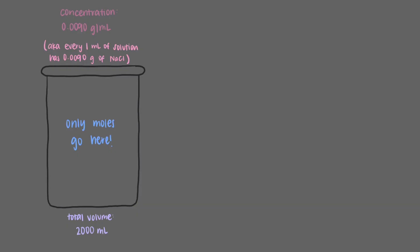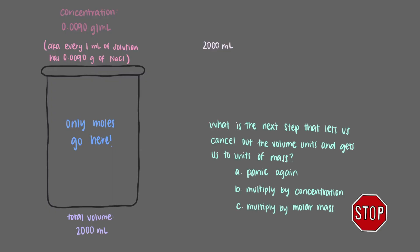To figure out how many moles of sodium chloride are in our 2,000 milliliter solution, we'll start with the 2,000 milliliters. What is the next step that lets us cancel out the volume units and gets us to units of mass? We're given the concentration of the saline with units of grams per milliliter. This means that, like density in the previous video, concentration is key to getting us from units of volume to units of mass.